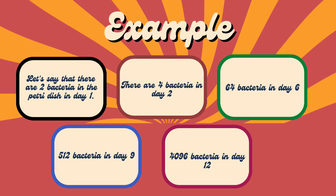Let's say that there are two bacteria in the petri dish on day one. On the next day, the bacteria doubles, so it will become four. You just have to double the number of bacteria every day until you get up to the 12th day.